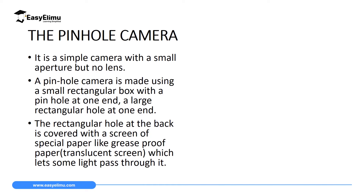A pinhole camera is a simple camera with a small aperture — sometimes we call it a hole — but it has no lens. This camera takes photographs without a lens. To make a simple pinhole camera you need a small rectangular box with a pinhole at one end. A pinhole means a very small hole made by a pin, which will only allow approximately one ray to pass through it. The other end has a large rectangular hole covered with a translucent material which acts as a screen on which images are formed.